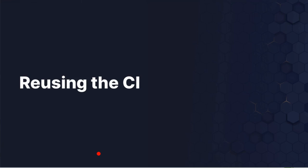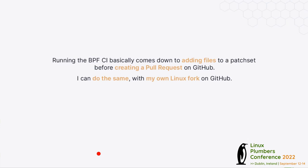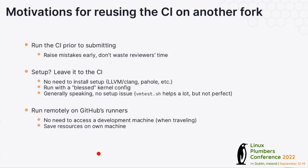I wanted to understand how the CI works more deeply — specifically, can I just push to a GitHub repo to trigger the CI? Can I reuse it for my own development workflow without sending patches or pinging people? The answer is yes, it's not difficult. It's the same thing: copy the files from bpf-test on top of my patches, create a pull request on any GitHub repository with a suitable base branch. I have my own Linux fork with a bpf-next branch, create the pull request, add the files on top, and the CI runs just the same.